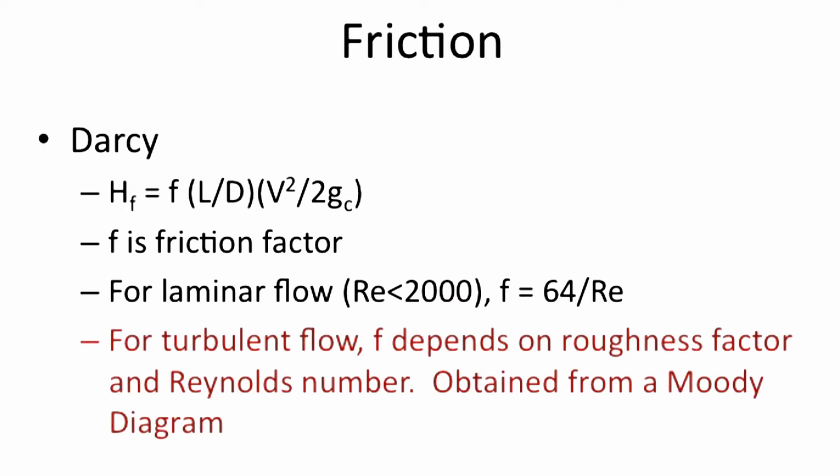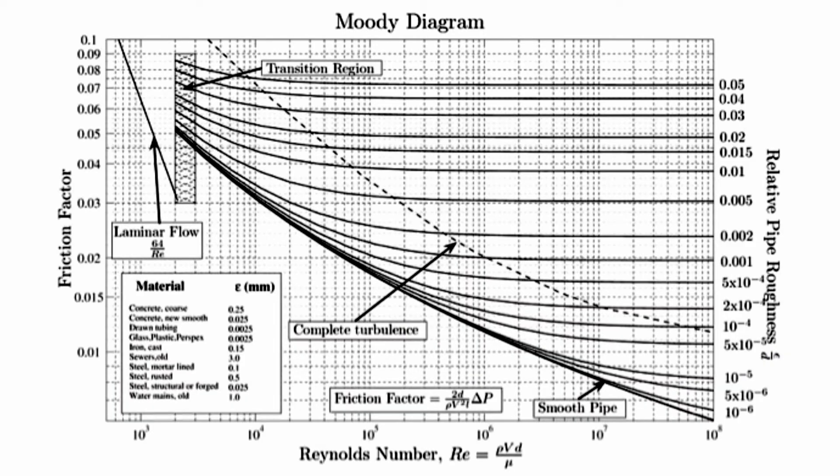In turbulent flow, the roughness of the pipe is important. A Moody diagram, which was developed in 1944, is utilized to calculate the friction factor based upon Reynolds number and the roughness of the pipe. The relative roughness of the pipe is determined by the ratio of epsilon over D, where epsilon is the relative roughness of the pipe found in tables, and D is the inside diameter of the pipe. This can be used for any liquid and a full circular pipe.